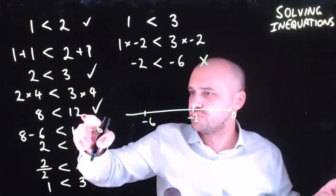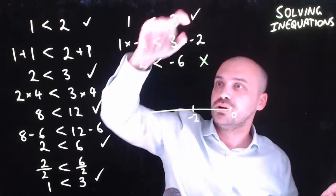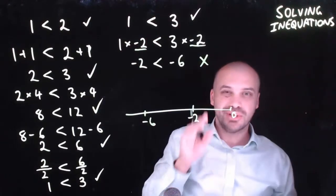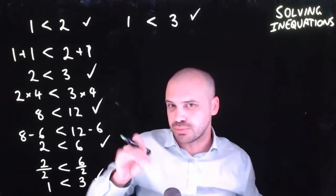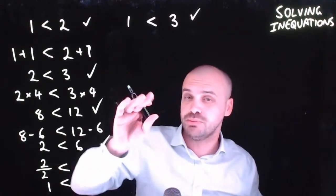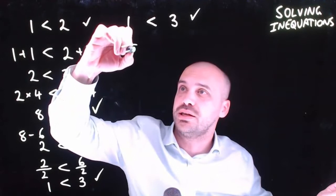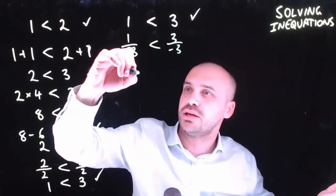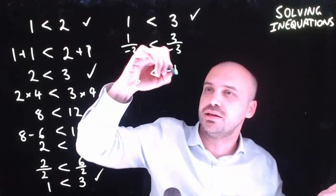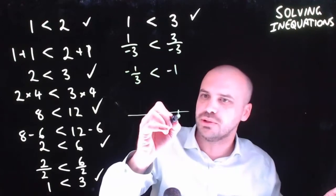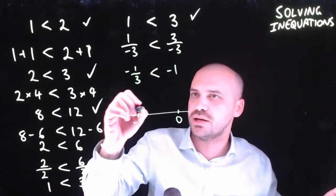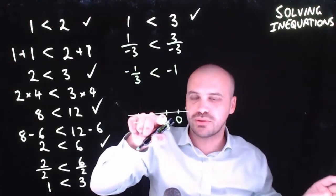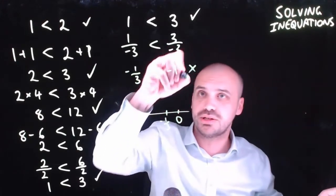Everything was true, true, true — and suddenly it's not true. Something about multiplying by negative 2 caused a problem. Similarly, dividing by negative 3 gives negative one-third is less than negative 1, but on a number line, negative one-third is larger than negative 1 — so that's not true either.